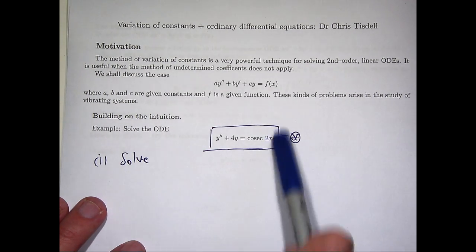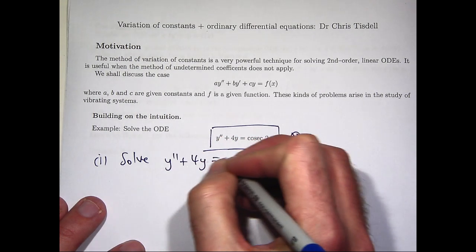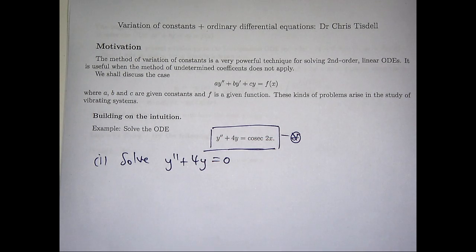It's a two-step process. So essentially, we forget about this right-hand side, just make it zero, and you want to solve this basic problem. So it's pretty easy to solve that.